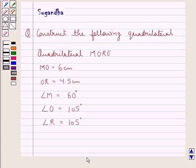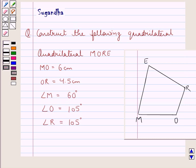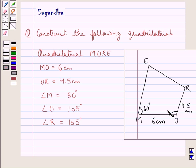Before drawing the actual figure, let's first concentrate on the rough sketch of the quadrilateral M-O-R-E. In the rough sketch, M-O is 6 cm, O-R is 4.5 cm, angle M is 60 degrees, angle O is 105 degrees, and angle R is 105 degrees.